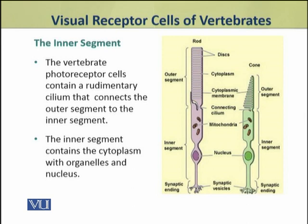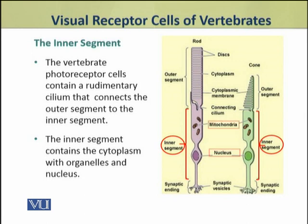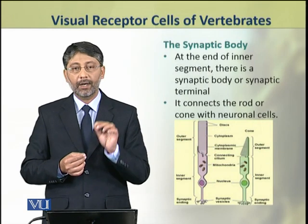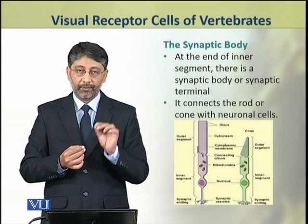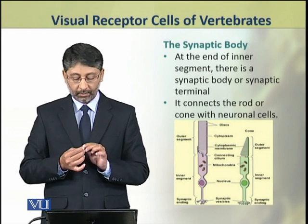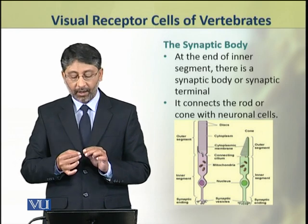The vertebrate photoreceptor cells contain a rudimentary cilium that connects the outer segment to the inner segment. The inner segment contains the cytoplasm with organelles and the nucleus. The third part of rods and cones is the synaptic body, which is present at the end of the inner segment and connects the rods or cones with the neuronal cells.